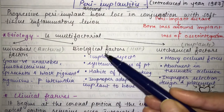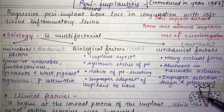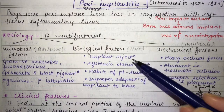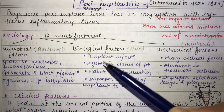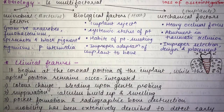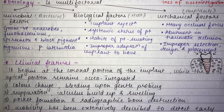Biological factors are host factors. These include implant rejection — since the implant is usually made of titanium, the host may treat it as a foreign body, causing inflammation. Other biological factors include the patient's compromised systemic health, habits such as chronic smoking, and improper adaptation of the implant to the bone.